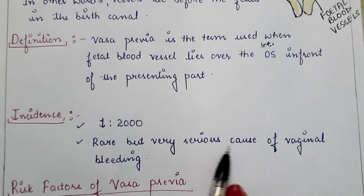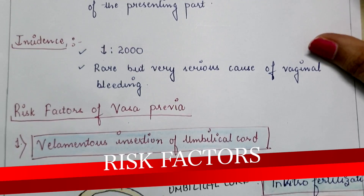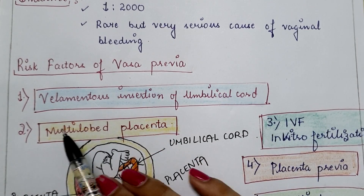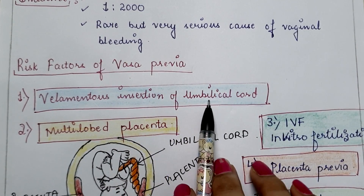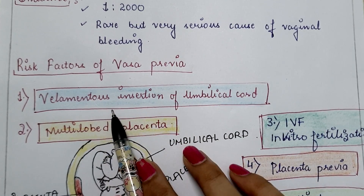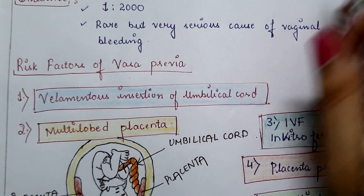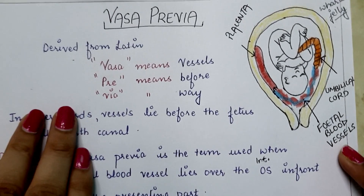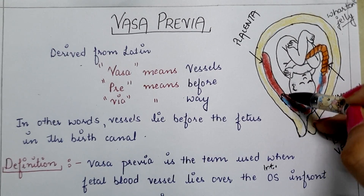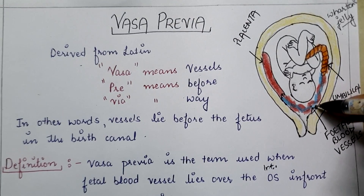As this is a serious cause of vaginal bleeding, next are the risk factors of vasa previa. The first one is velamentous insertion of the umbilical cord. Normally the umbilical cord is attached at the middle of the placenta, but in this case the umbilical cord is attached at the margins — as you can see in this diagram — so there are more chances of vasa previa.